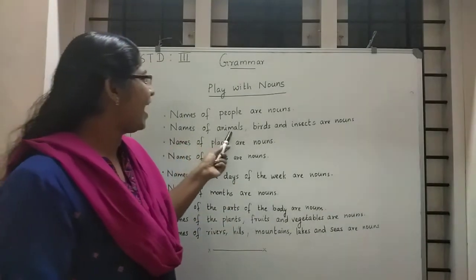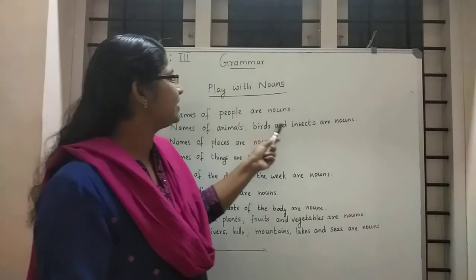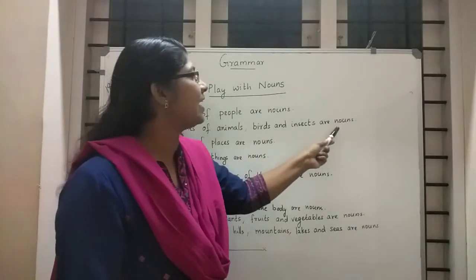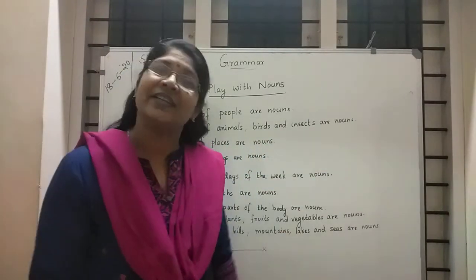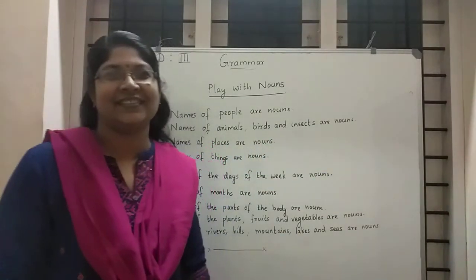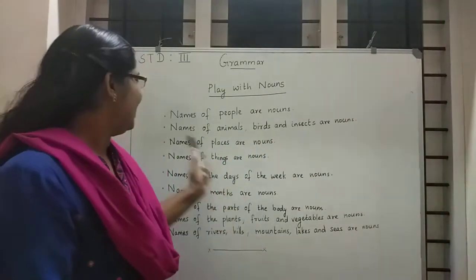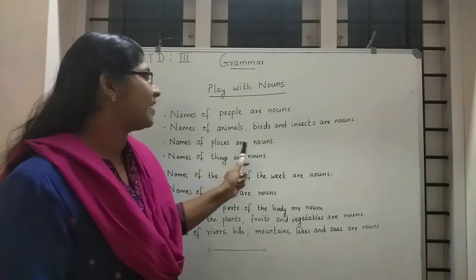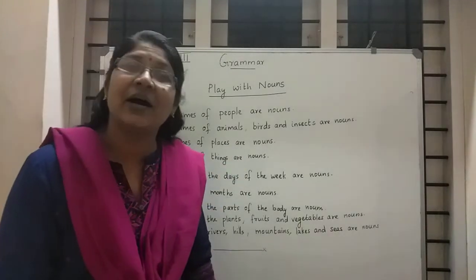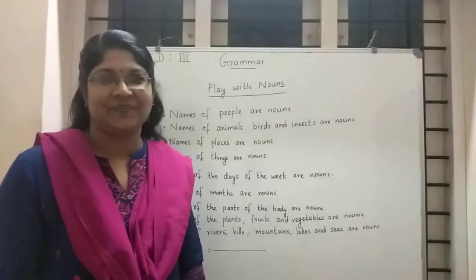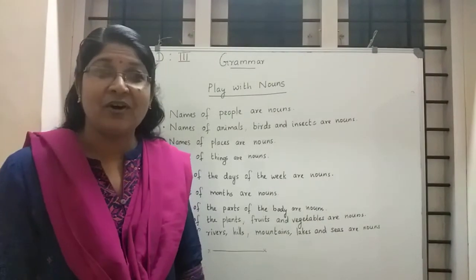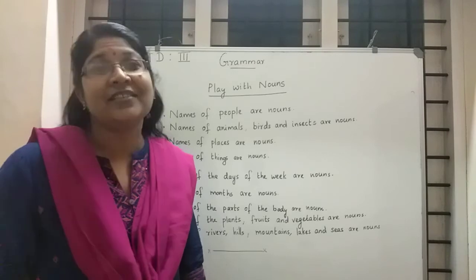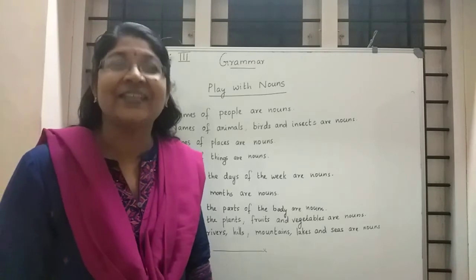Names of animals, birds, and insects are also nouns. Names of places are also noun.